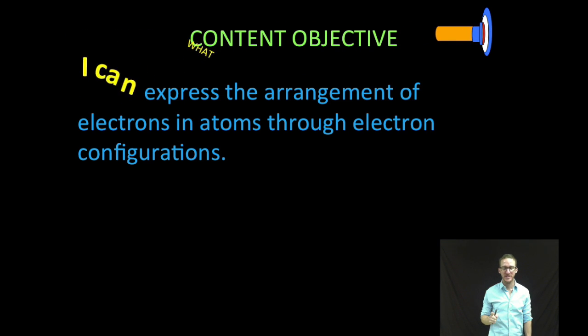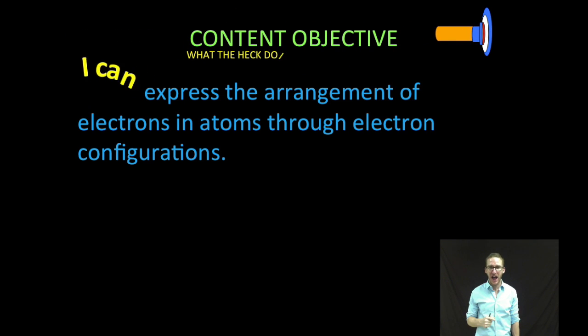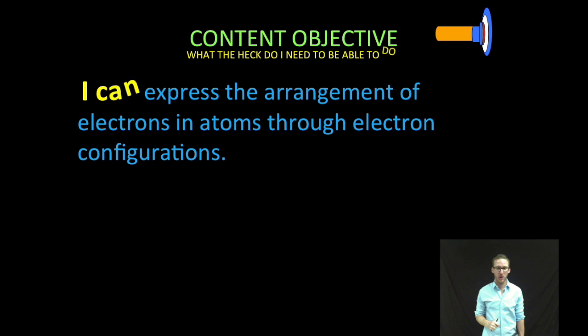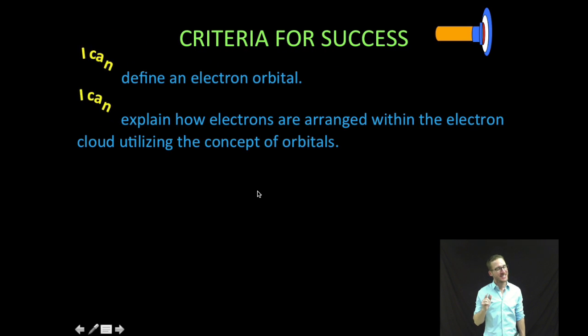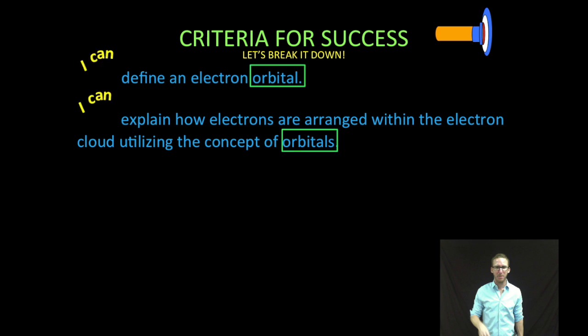Hey, what's up chemistry people? Mr. Boylan in the house. Today, we are going to express the arrangement of electrons in atoms through electron configurations. But let's break that down a little bit. Electron configurations is sort of a big complex task.